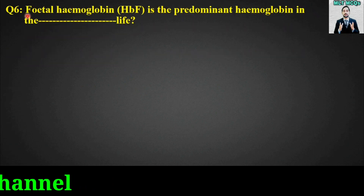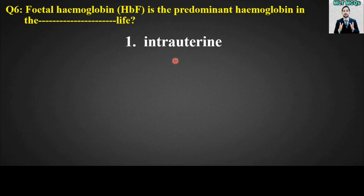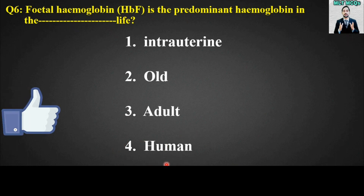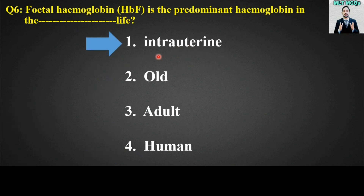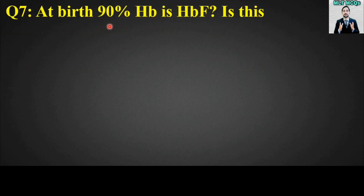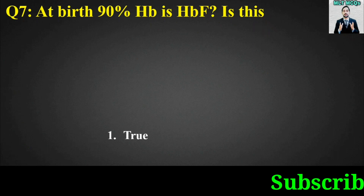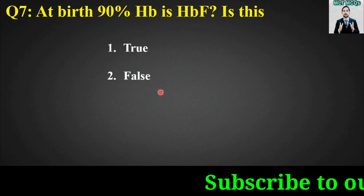MCQ number six: Fetal hemoglobin HbF is the predominant hemoglobin in the blank life. The right answer is option number one — fetal hemoglobin HbF is the predominant hemoglobin in intrauterine life.